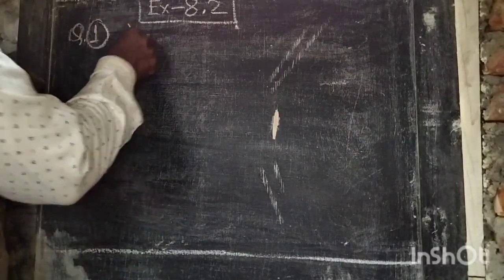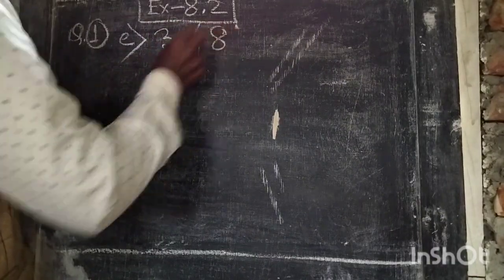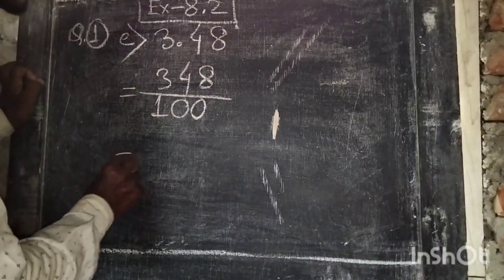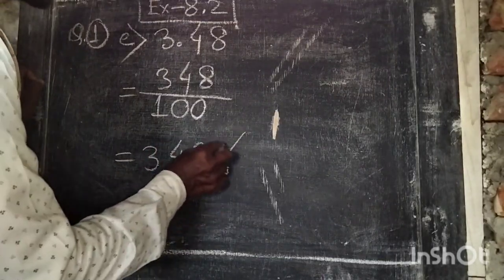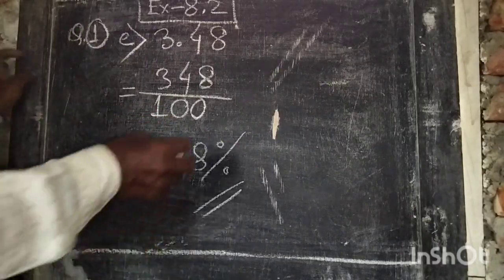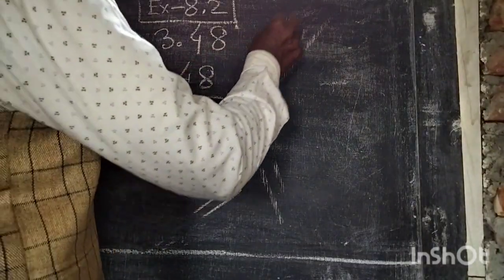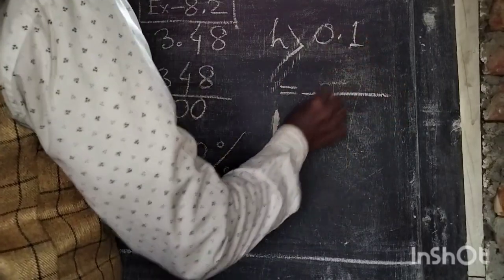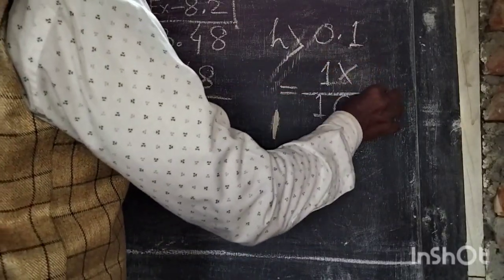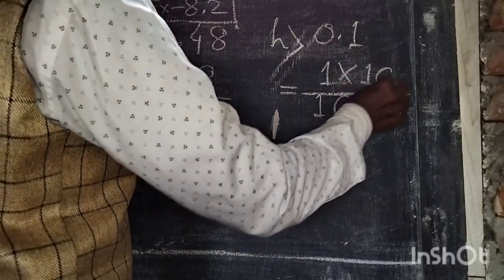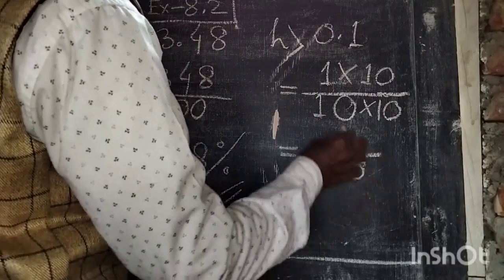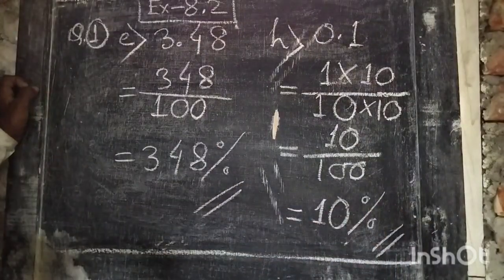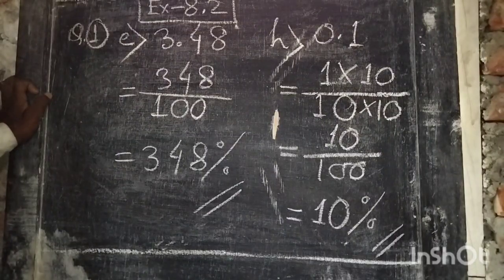Part E: 3.40 — there are 2 digits after the decimal point, so the denominator is 100, giving 340 by 100, which is 340 percent. Part F: 0.1 — 1 digit after the decimal point, so multiply by 10 over 10 to get denominator 100. This gives 10 by 100, which is 10 percent.